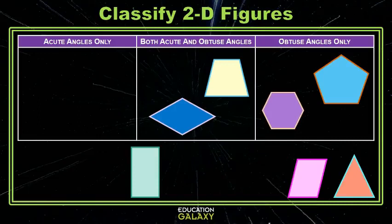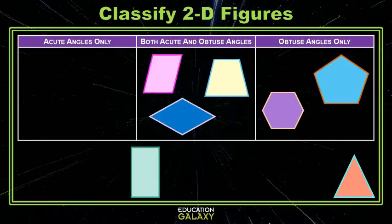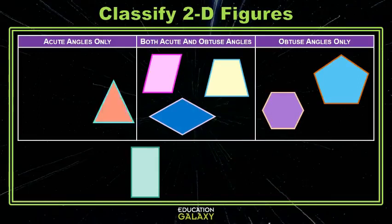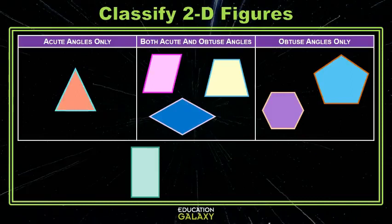The hexagon appears to have all obtuse. The next figure, the parallelogram, appears to have two obtuse opposite and two acute opposite. And then lastly, this triangle looks like all acute angles to me. So everybody has a home, but the rectangle for this example.